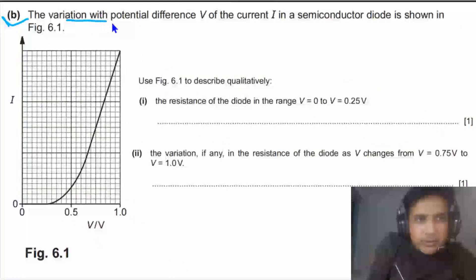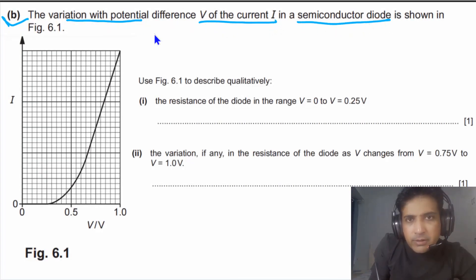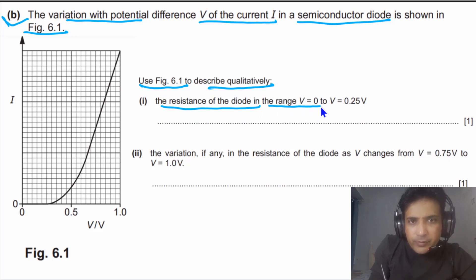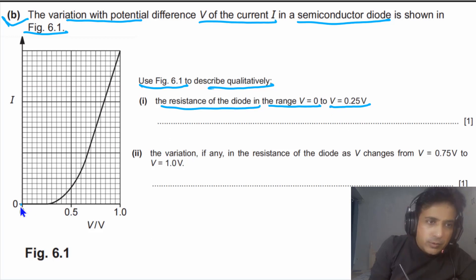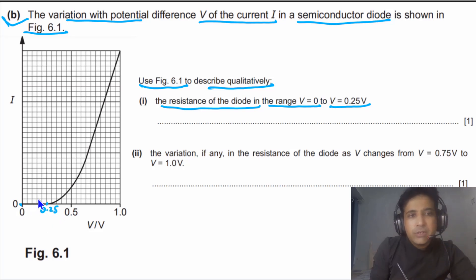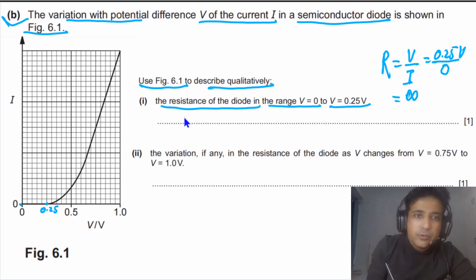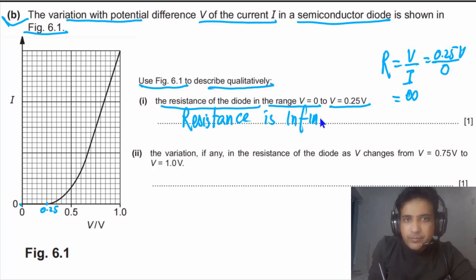For part B, the variation with potential difference V of the current in a semiconductor diode is shown in figure 6.1. We need to describe qualitatively the resistance of the diode in the range from V = 0 to V = 0.25 volts. In this range, the current is equal to 0. Using R = V/I, with V = 0.25 volts and I = 0, the resistance in this range is infinite.